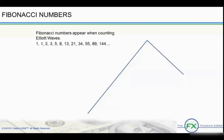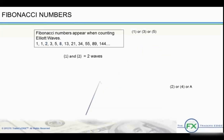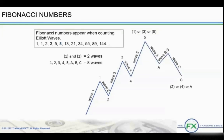Fibonacci numbers also appear when counting Elliott waves. Waves 1 and 2 equals 2 waves. Now, you are beginning to see the repetitive nature of the waves that Elliott first described when he looked at the stock market as a fractal. The complete eight-wave cycle — 1, 2, 3, 4, 5, A, B, C — is really two waves of a larger degree. Waves of any degree in any series always subdivide into waves of a lesser degree.